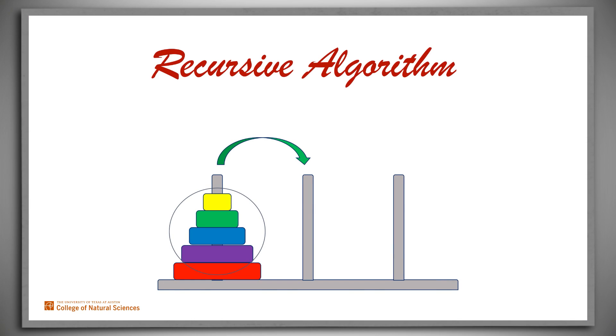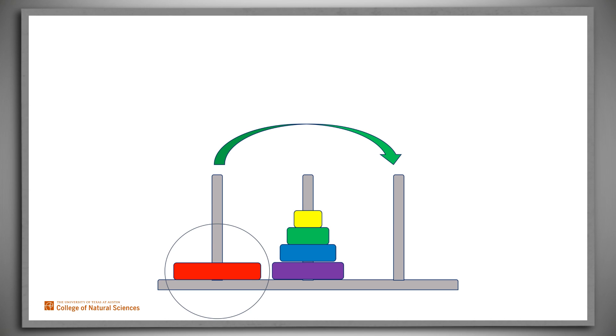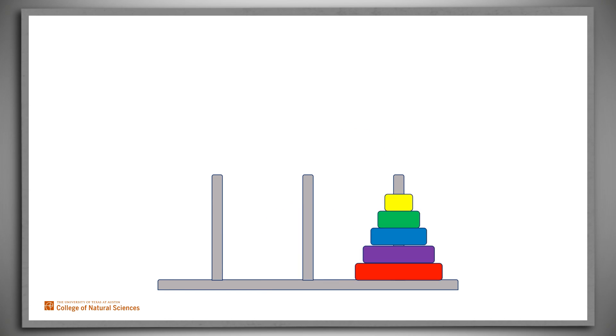The most straightforward way to solve this problem is to use a recursive algorithm. To move n disks, we first move n minus 1 disks out of the way. We move the bottom disk, and we again move n minus 1 disks, this time onto the final pole.